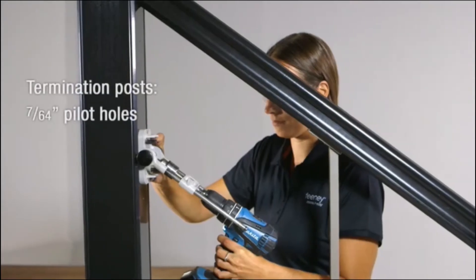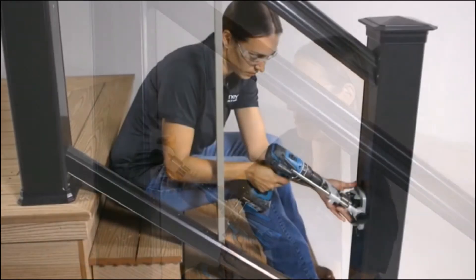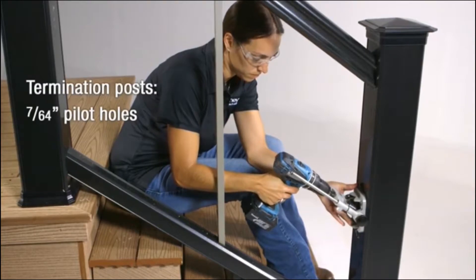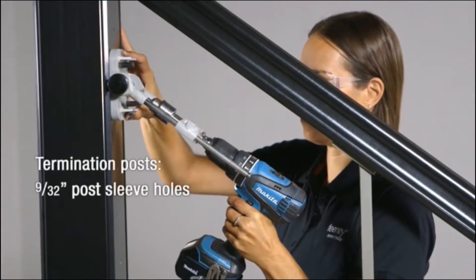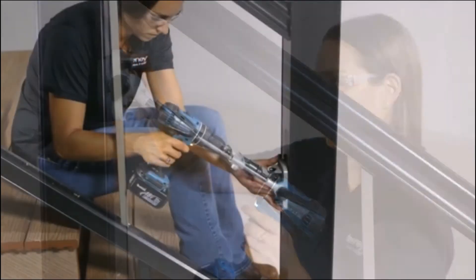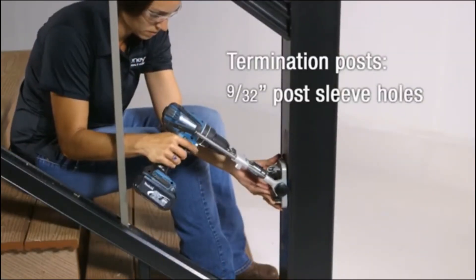On each termination post, use a seven sixty-fourths inch drill bit to drill angled pilot holes two inches deep into the wood posts. Then use a nine thirty-seconds inch drill bit to drill angled holes through just the post sleeve. The angle we are using is the same as the slope of the stairs.